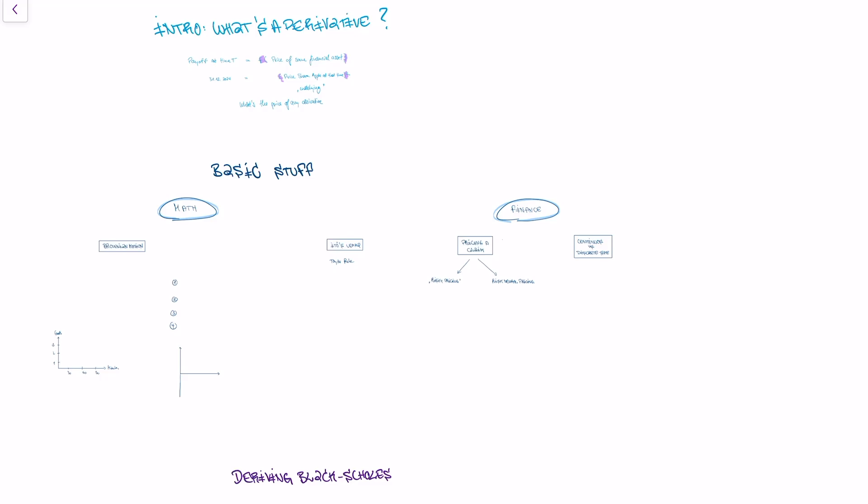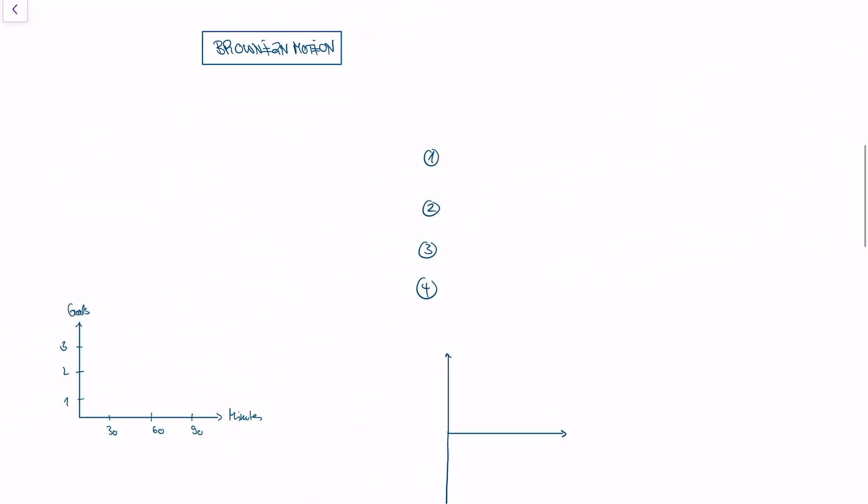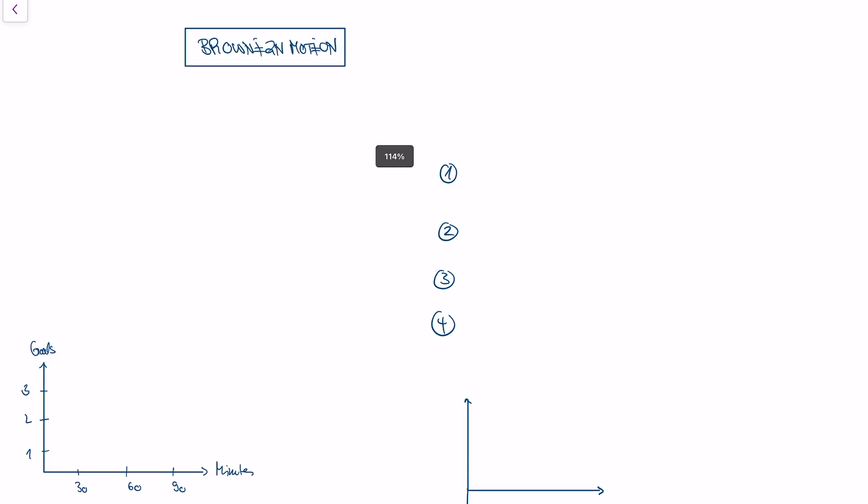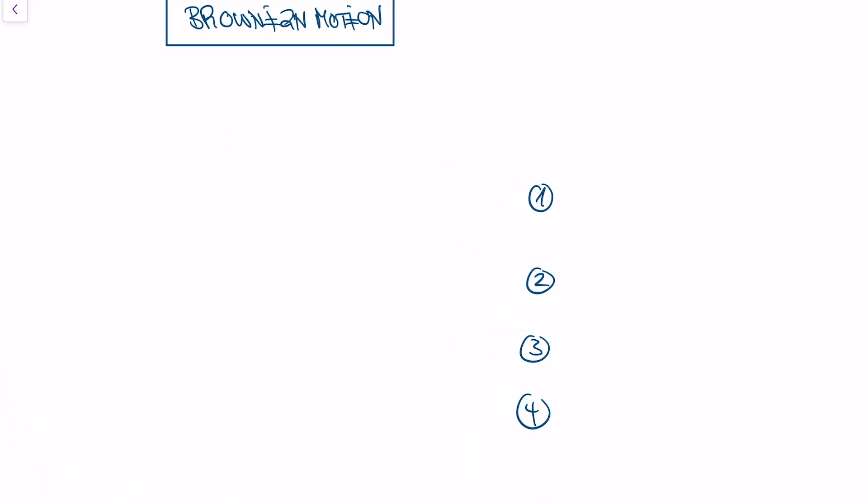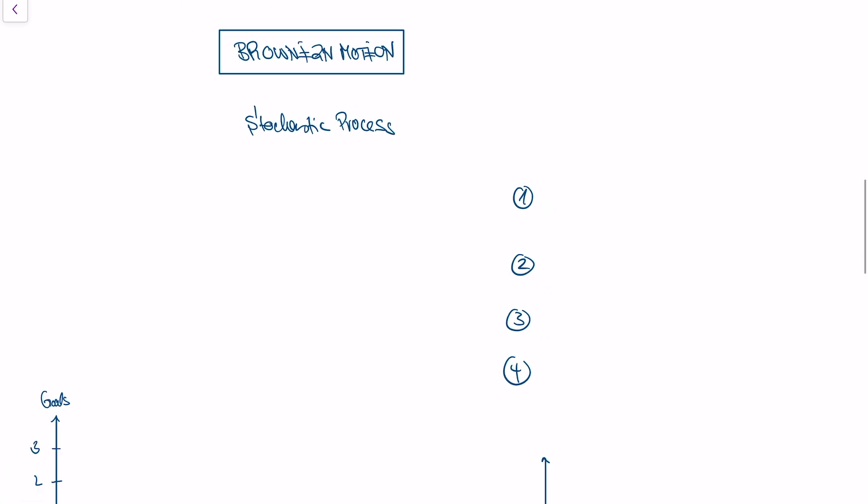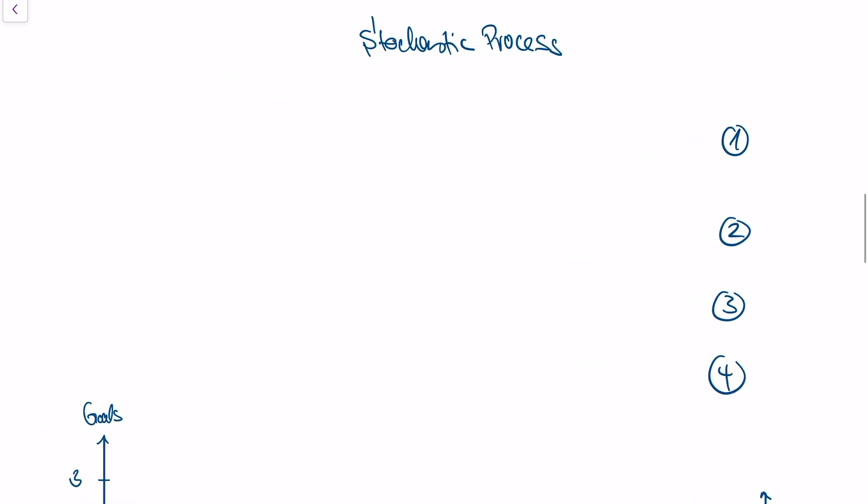We're in our series on the Black-Scholes model, and today we're talking about Brownian motion. This is going to be our central tool to model the price of a financial asset. Brownian motion is a stochastic process. I will first give you a simple example of a stochastic process, and then we're going to get into Brownian motion, which is a very specific stochastic process.